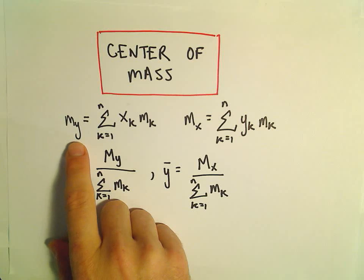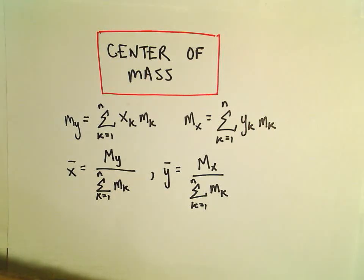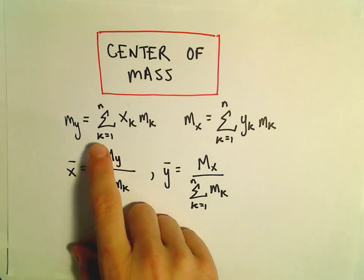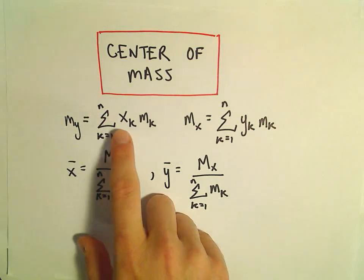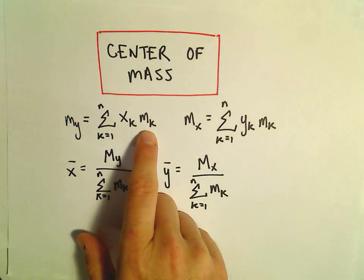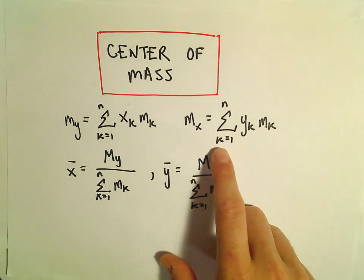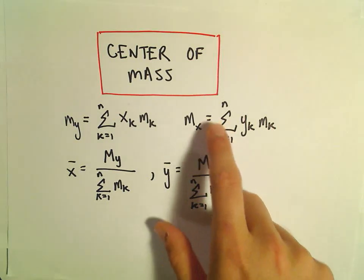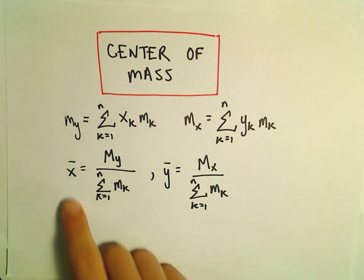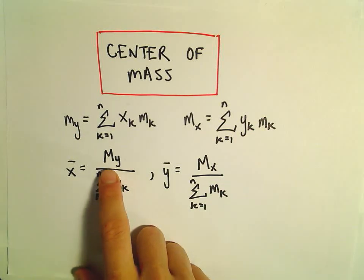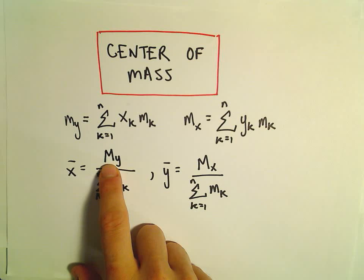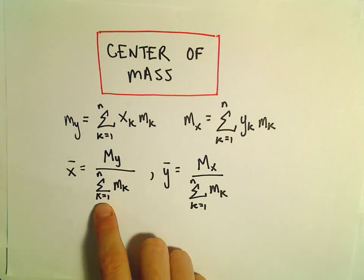We've got the moment about the y-axis, our little m sub y, and that's the summation from k equals 1 to n of x sub k times m sub k. Our moment about the x-axis is analogously the sum from k equals 1 to n of y sub k times m sub k. And to get x-bar, we'll take our m sub y and divide by the total mass.